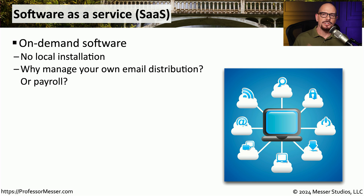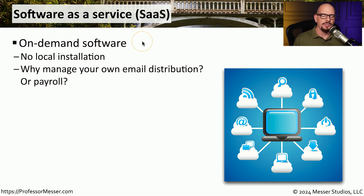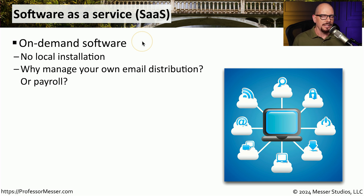One type of cloud model is software as a service, or SaaS. This is commonly associated with software that is on demand. You have a login screen in your browser, you log in, and now you have access to the application. Someone else has written the application, someone else manages the application, your data is stored somewhere within that application, and you don't have to do anything else to use that particular app. You don't have a local installation of software, you don't manage or upgrade any of the software itself. Instead, you simply log in and use the app.